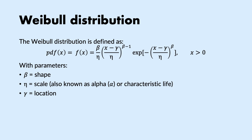We have seen how to model equipment lifetime following a bathtub curve using the log normal, normal, and exponential distributions. But wouldn't it be great if a single distribution could model all three periods just by different configurations? That is possible, and it is called the Weibull distribution. Its probability density function has three parameters: beta (the shape), the scale, and the location. We will see how changing these parameters provides shapes resembling either a normal, log normal, or exponential function.